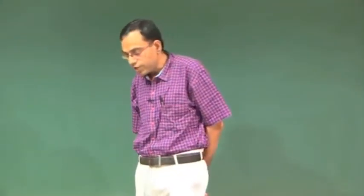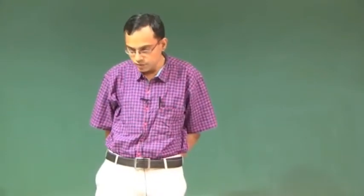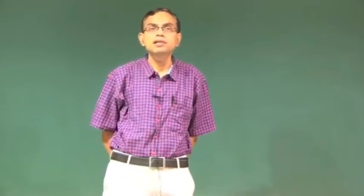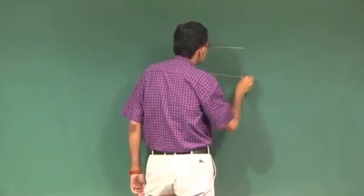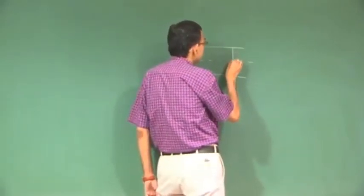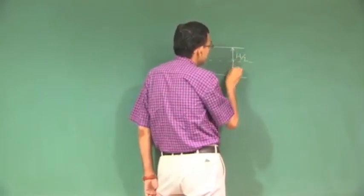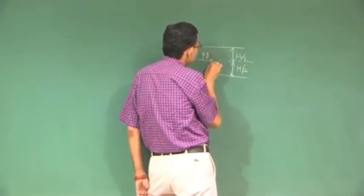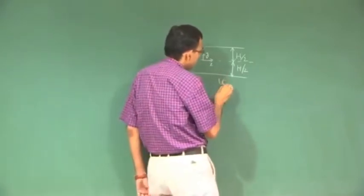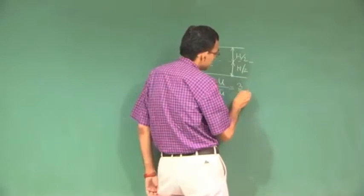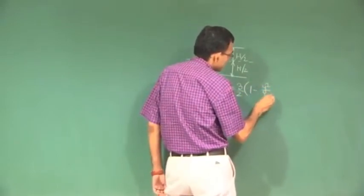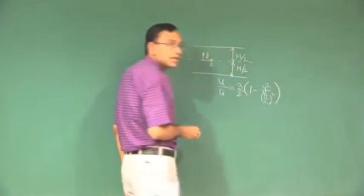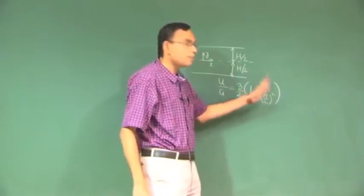In the previous lecture, we were discussing exact solutions of the Navier-Stokes equation and started with a very simple case of flow through a parallel plate channel. If the flow is fully developed, the height of the channel is h, and with a given coordinate system, we derived this expression for the velocity profile — that is where we stopped in the previous class.